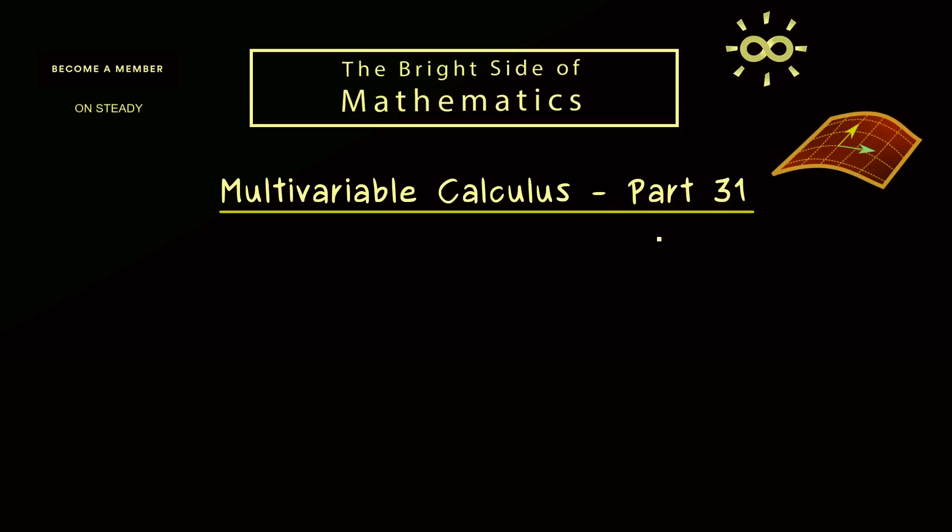In today's part 31, we will talk about the so-called Lagrangean function. This one can be used to reformulate the method of Lagrange multipliers, which is used to find extrema under constraints.